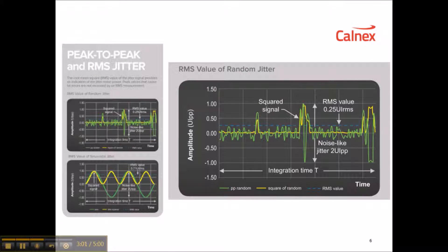So let's talk about the difference between peak-to-peak and RMS Jitter. Jitter is generally expressed in terms of unit intervals where a UI equals one bit time of a digital signal. It's generally expressed as peak-to-peak Jitter, for example two UI peak-to-peak, or root-mean-square Jitter, for example 0.25 UI RMS. In telecoms it's peak Jitter which causes clock recovery circuits to lose lock and for errors to occur, so telecom standards focus on peak-to-peak Jitter.